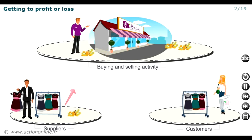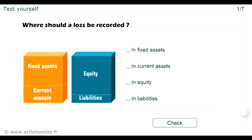Particular attention will be paid to showing a profit, as the business's survival depends on this. Where should a loss be recorded? In fixed assets? In current assets? In equity? In liabilities?